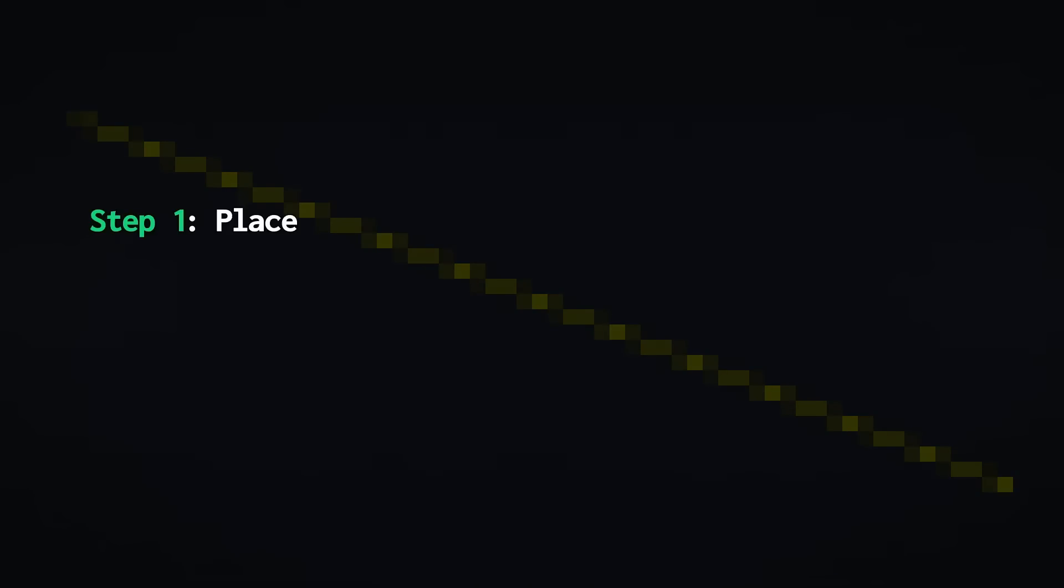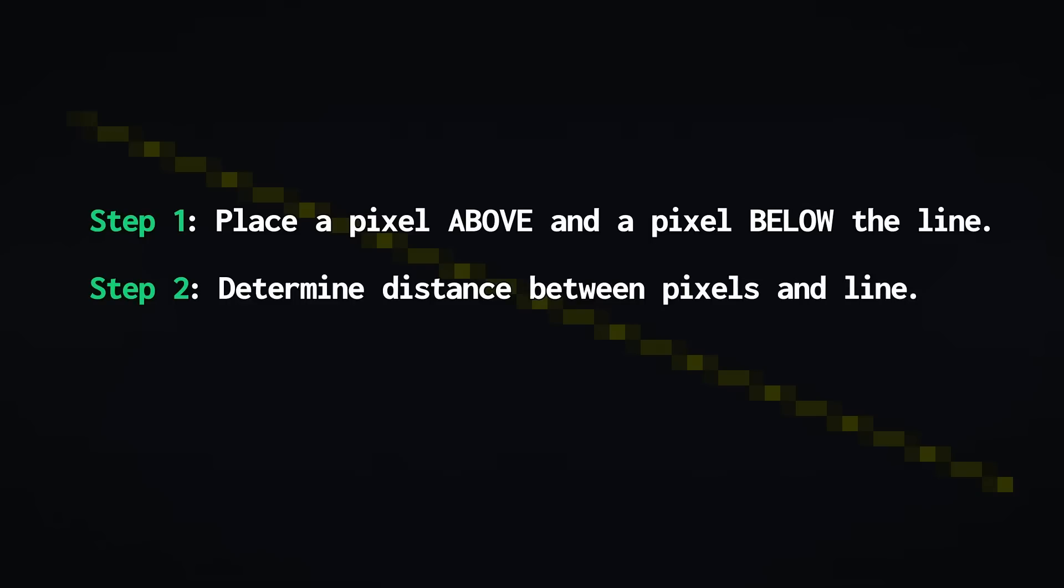From all these observations, we now know some important facts about the algorithm. First, we know that we have to place a pixel directly above and below our line along its entire length. Second, we need to find the vertical distance for each pixel on the line. And finally, we use these distances to calculate their opacities.